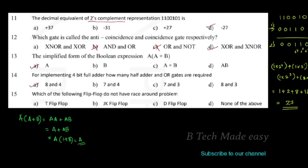Next question: which of the following flip-flops does not have the race-around problem? Options are T flip-flop, JK flip-flop, D flip-flop, or none of these. The Master-Slave JK flip-flop does not have the race-around problem, but since there is no such option listed, the answer is Option D: none of the above.